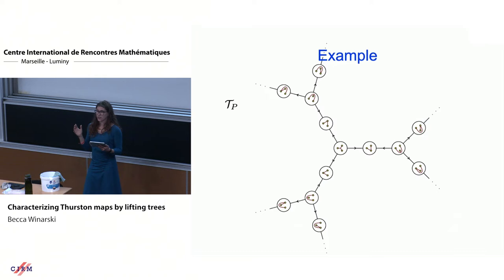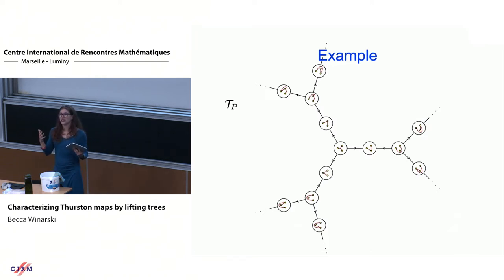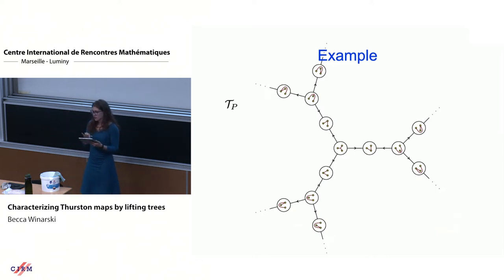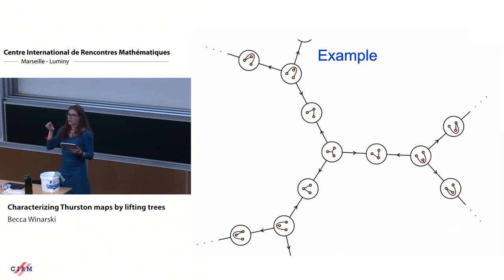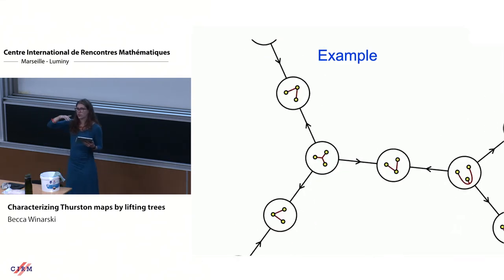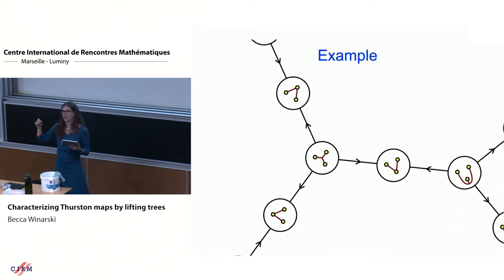For example, with four marked points in the complex plane, two trees are adjacent in the tree complex if one is obtained from the other by contracting an edge e. For three marked points, the tree complex is the 3-2 bipartite regular tree. In the center is the Hubbard tree for the rabbit polynomial, and adjacent to it are three paths of length two, each obtained by contracting one of the three edges.